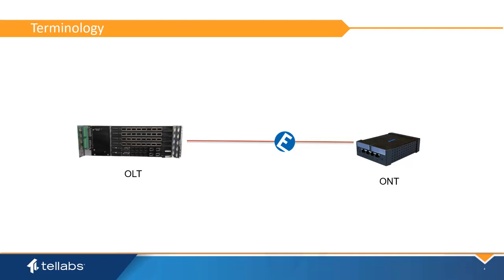Before we begin, it is important to understand the terminology used when calculating the optical power budget for the system. Launch power is the amplitude or energy of light that leaves the fiber transmitter. The energy level of the launch power is usually measured in decibels relative to 1 milliwatt, or dBm.